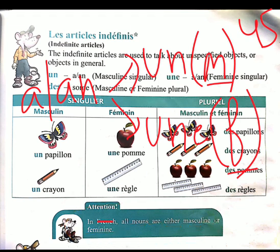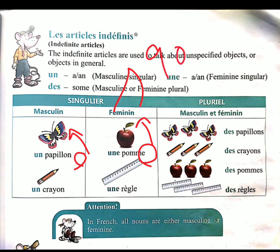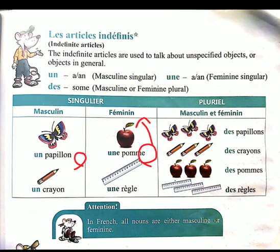We need to convert everything into male or female. How do we know which word is male and which is female? It is simple: if the word ends with 'e' then it is feminine; if the word does not end with 'e' then it is masculine. This rule works for about ninety percent of cases, not always one hundred percent. There is no logic behind it — we just have to learn it.